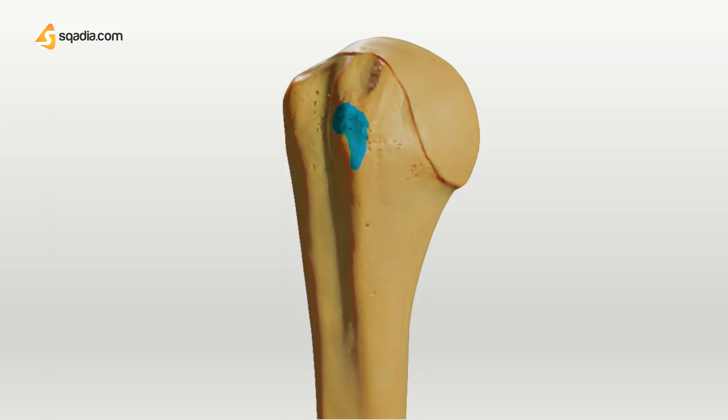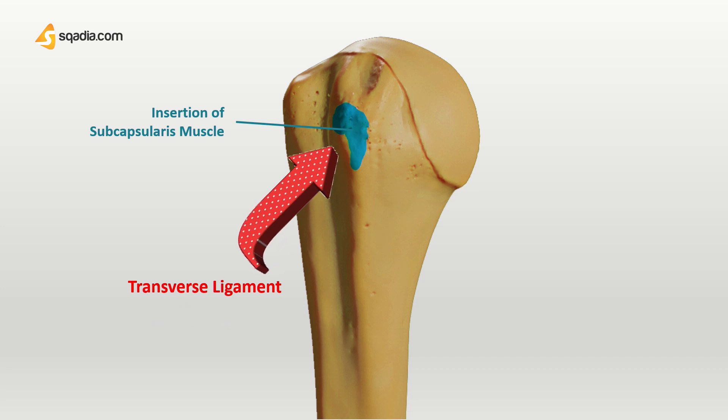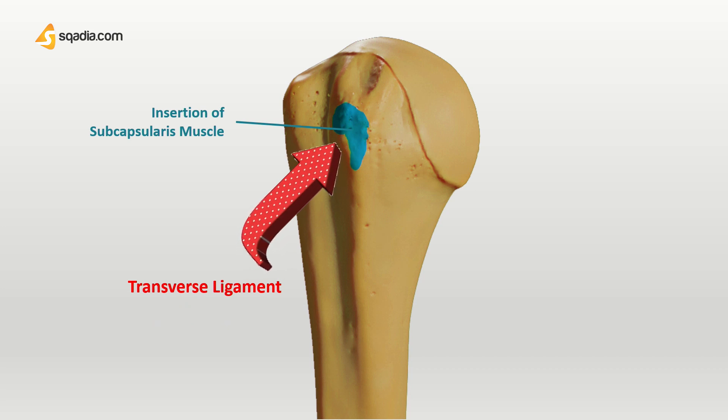On the lesser tubercle, there is an attachment point for the subscapularis muscle. On the lateral end, the transverse ligament of the shoulder also attaches.